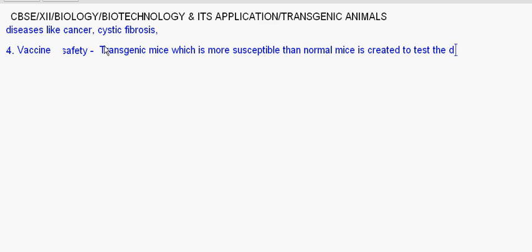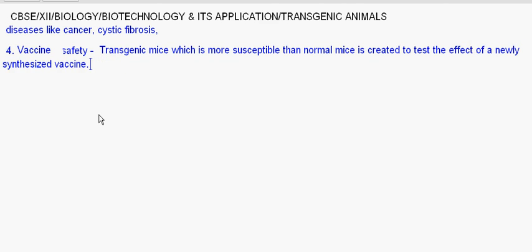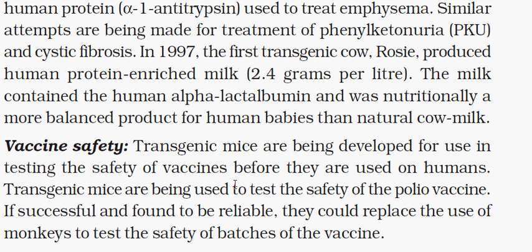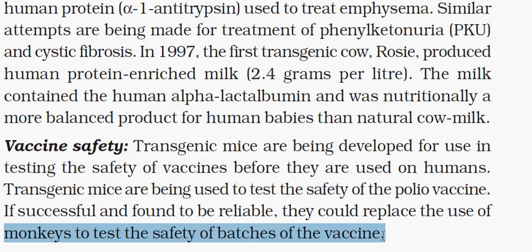When testing on mice gives a positive result, the transgenic mice are replaced by monkeys to further test the safety of the vaccine. Transgenic mice are thus used to test the safety of vaccines before they are used on human beings. For example, the safety of a polio vaccine is tested this way.